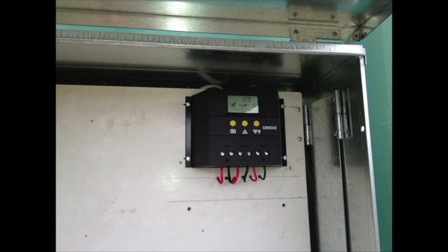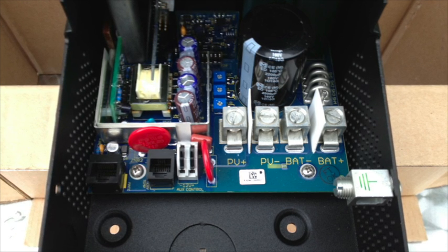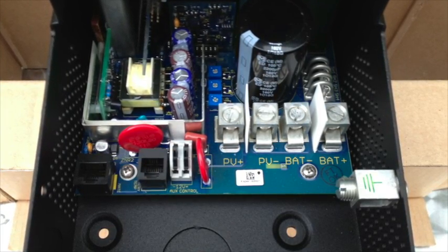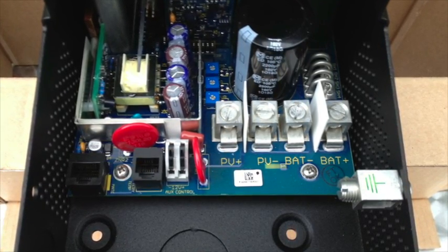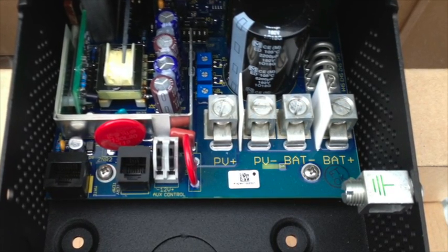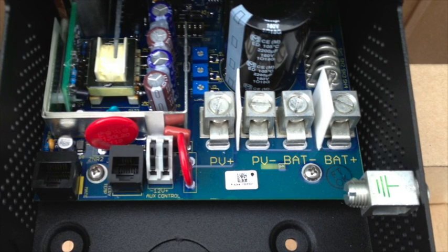So what you do is you have a string on this side and you have a string on this side. Cheap charge controllers can generally only handle small size strings. And they're usually not very efficient. A better quality has something called MPPT, which is maximum power point tracking, which gets a lot more of the electricity into the batteries from the solar panels. They're more efficient. You normally need a better quality unit to be able to handle two different strings by itself.